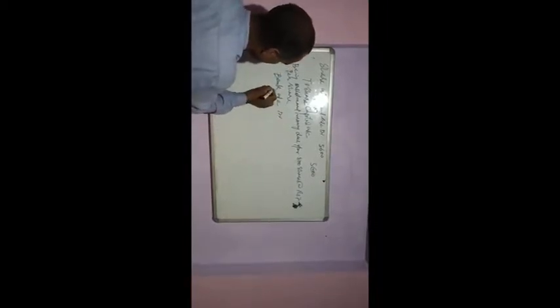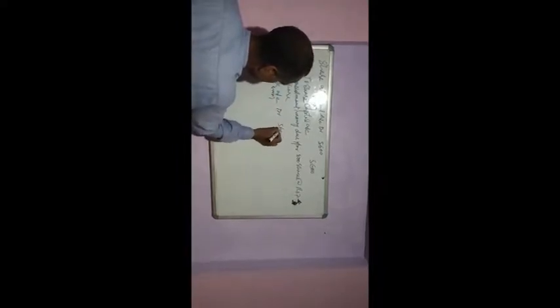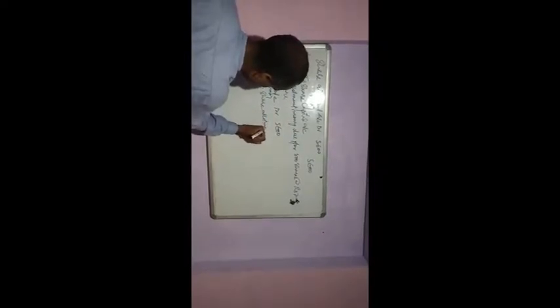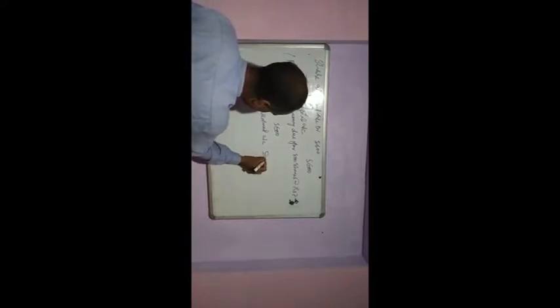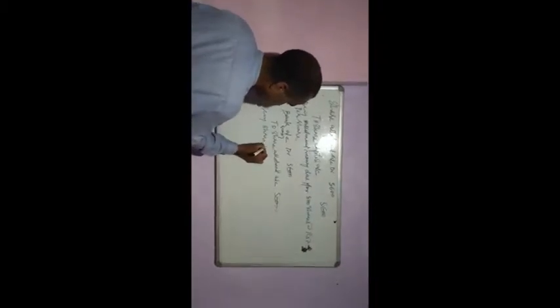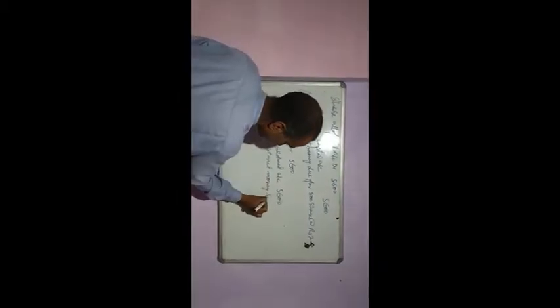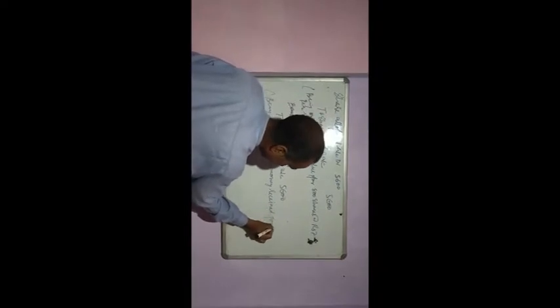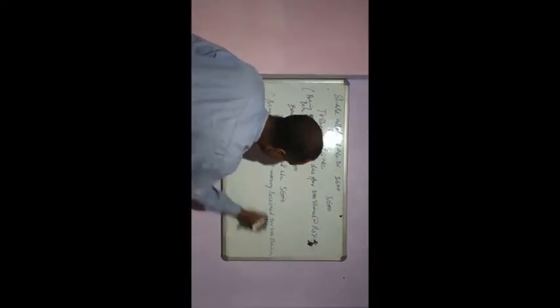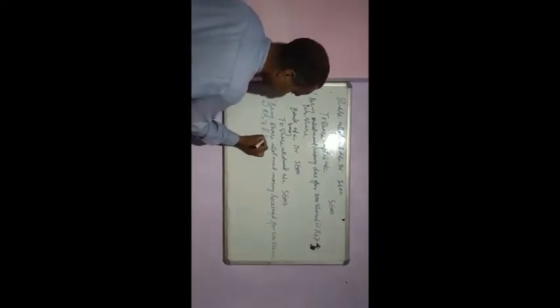Now the money will come. Let's see the receipt entry. Bank account debit. How much is it? 800 multiplied by 7, that is 5,600 to share allotment account. 5,600 being allotment money received for 800 shares at the rate of 7 rupees per share.